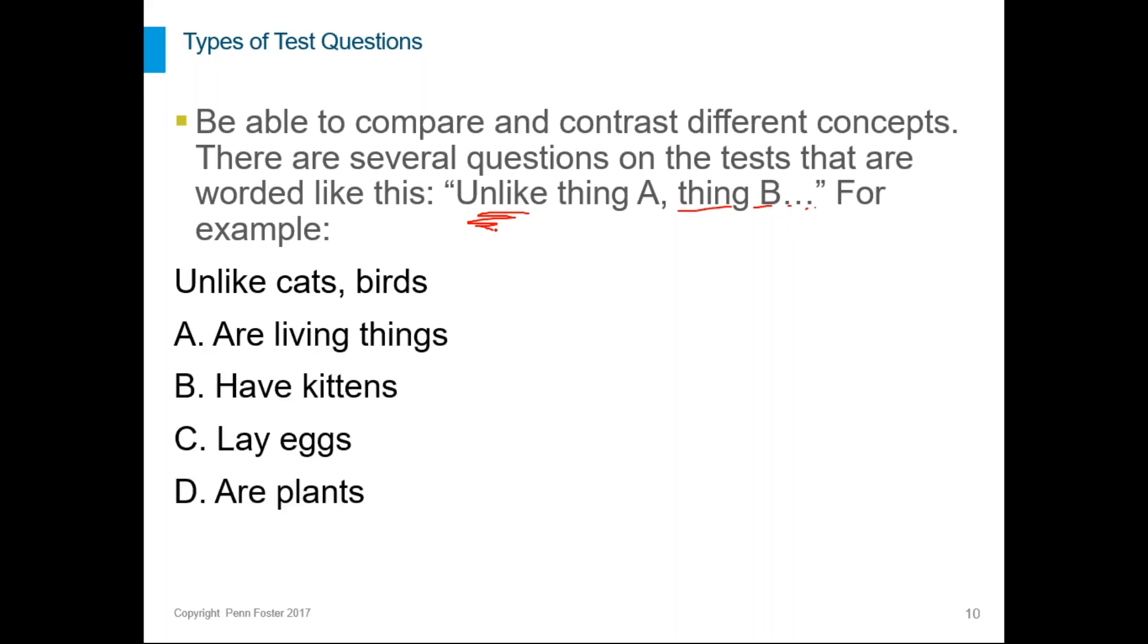So let's look at our example. Unlike cats, birds, what? Are living things, have kittens, lay eggs, or are plants? So we are looking for the option that is something that's true about birds because that's how we're finishing our sentence. Okay, birds dot dot dot. Birds what? So something that's true about birds but we're also looking for something that's not true about cats. So it's a difference between cats and birds. So you're looking for an answer that is true about the second thing but is not true about the first thing. So the only thing that actually meets this requirement would be C.